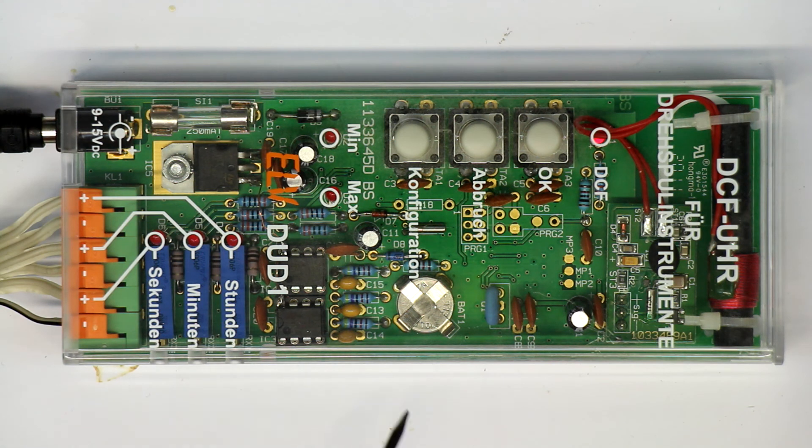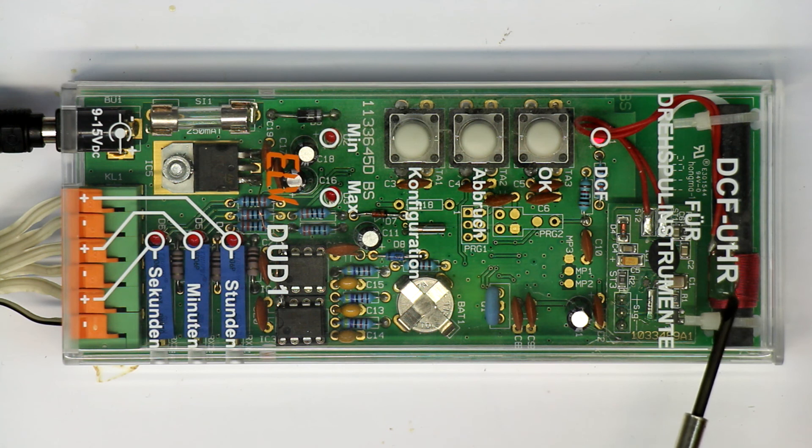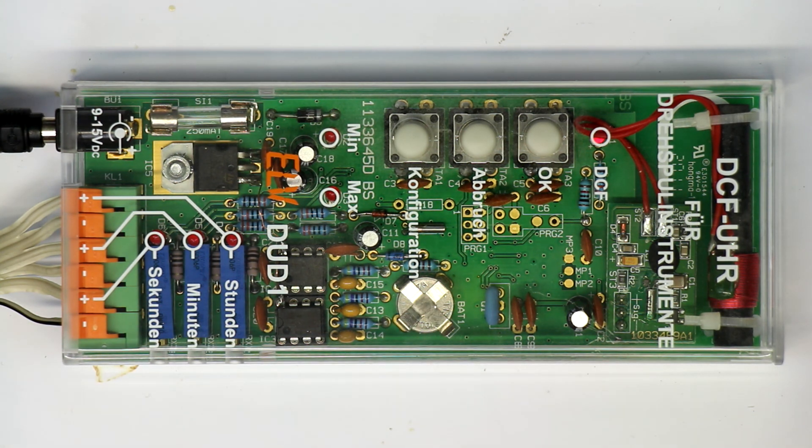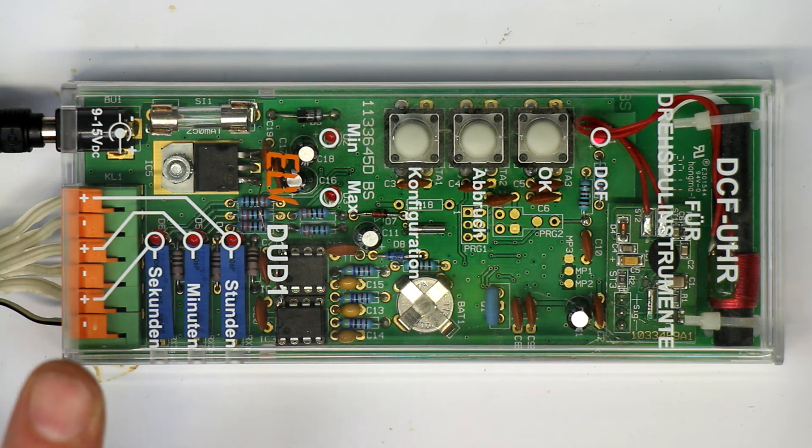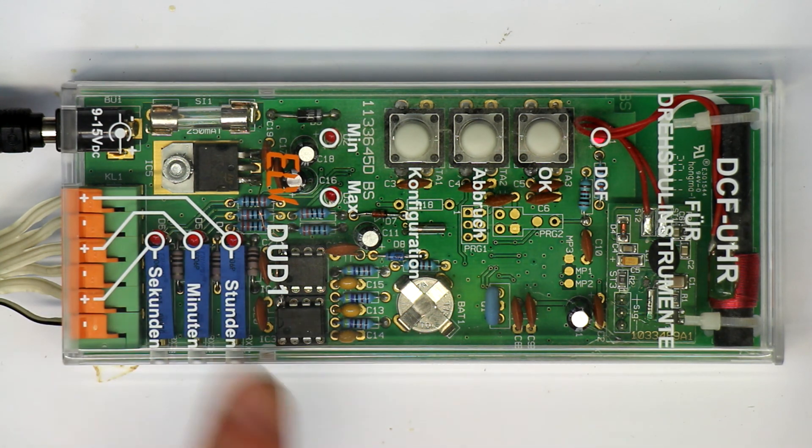And there's a little coin cell here, so it has a real-time clock just to bridge the time if you either have no reception of the German time code or you disconnect power, so that the microcontroller can keep the time with its internal real-time clock. So a nice kit, a nice acrylic, or in this case I think it's polycarbonate case, but sadly the case is still available—I've just looked it up—but the kit is no longer available.